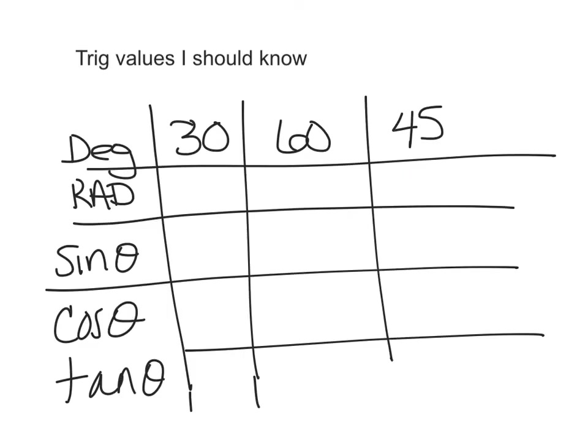So what are some trig values that you should know? Of course, 30, 60, and 45 are our three main degrees. You really need to be able to convert those into radians pretty quickly. To convert from degrees to radians, you multiply by what you want - if you want an answer in radians, multiply by pi over 180.